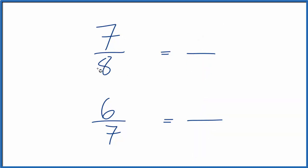I could list all the multiples of 8 and 7, see if I could find a common multiple. But in this case I'm just gonna multiply 8 times 7 because that'll give me 56. And here I'm gonna multiply 7 by 8 because that'll give me 56. So now I have the same denominator.